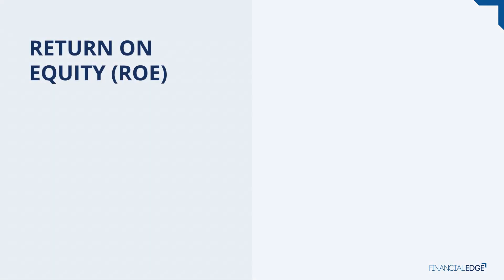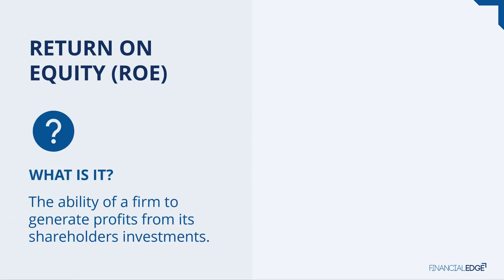Here, we look at return on equity. What is it? Well, it's the ability of a firm to generate profits from its shareholders' investments. So if I, as a shareholder, invested 100 and I got a return of 5, that would be a 5% return on equity. So ROE is a percentage ratio.